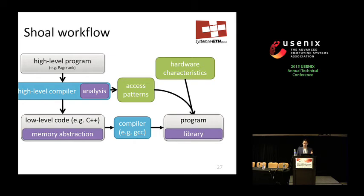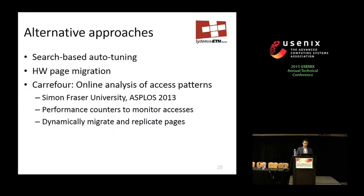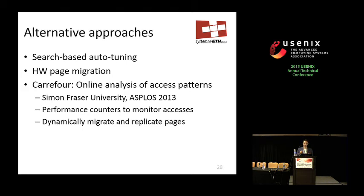Before diving into related work, I'd like to discuss alternative approaches. One is a search-space-based approach: try various configurations and use the best one. Another is hardware page migration, where hardware monitors which pages are accessed and dynamically migrates them closer to where they're needed. This can also be done in software — one popular project is Carrefour from Simon Fraser University presented at ASPLOS 2013, which uses Linux kernel performance counters to find memory access patterns and dynamically migrates and replicates data.